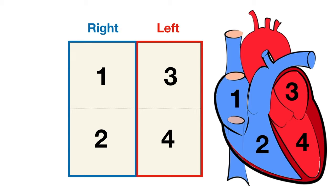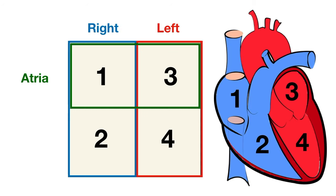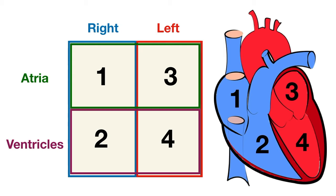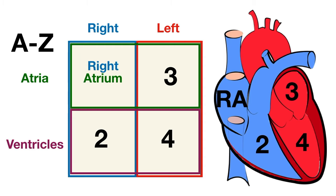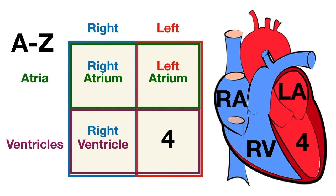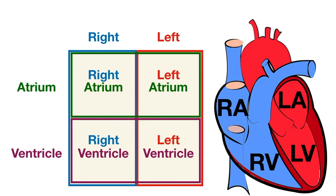We can further divide the chambers into top and bottom. The two chambers on top are known as the atria, including boxes one and three, and the two chambers on the bottom are known as the ventricles, including boxes two and four. An easy way to remember: A comes before V in the alphabet, so the atria are located superiorly and the ventricles inferiorly. Box one is the right atrium, box two is the right ventricle, box three is the left atrium, and box four is the left ventricle.